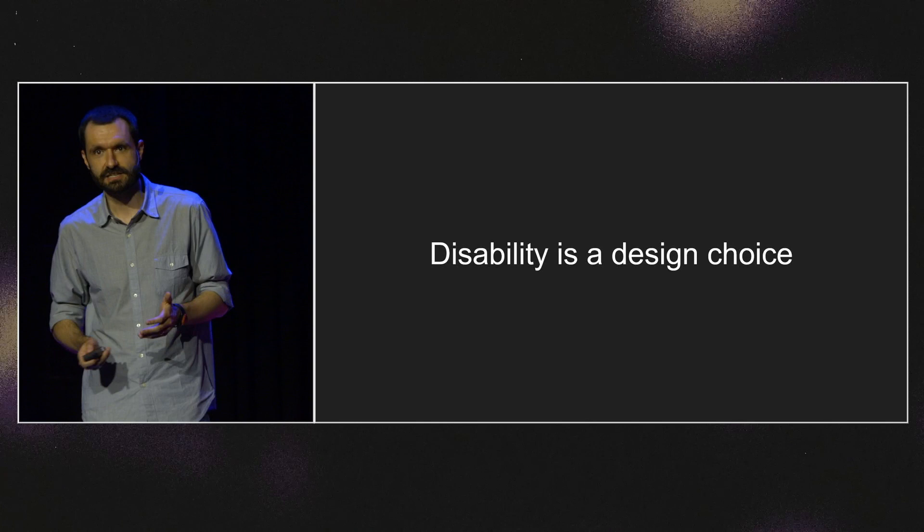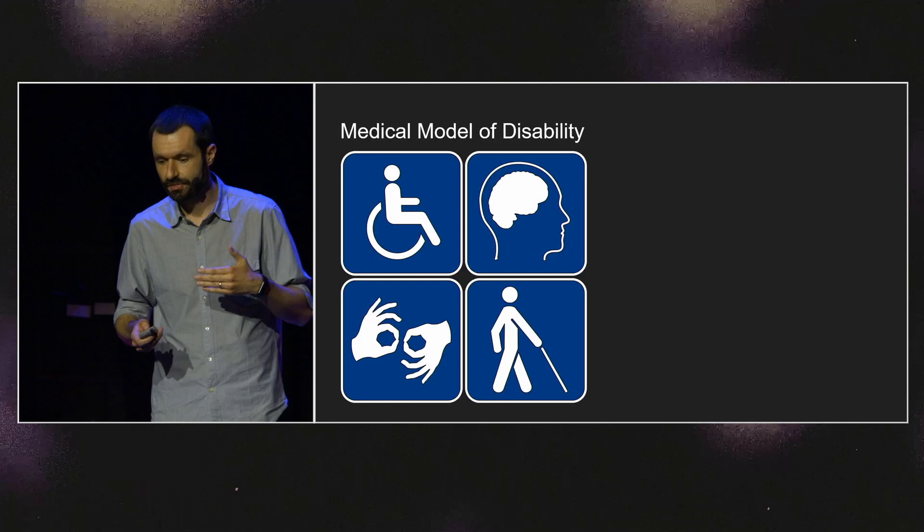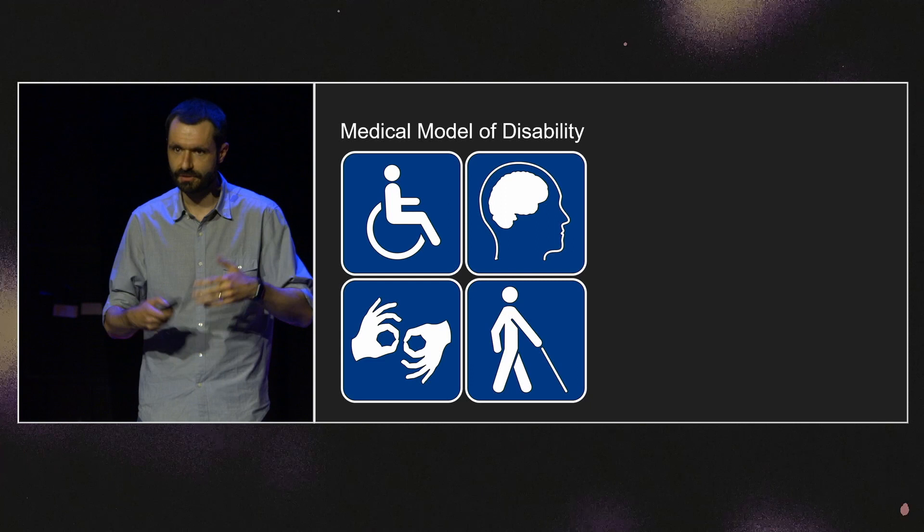Disability is a design choice. This is probably a mildly uncomfortable assertion to make. It pushes back against a common sense understanding of disability — this is often called the medical model of disability. This view says that the problem is in the impairment itself: the eye that can't see, the ear that can't hear, the leg that can't walk.